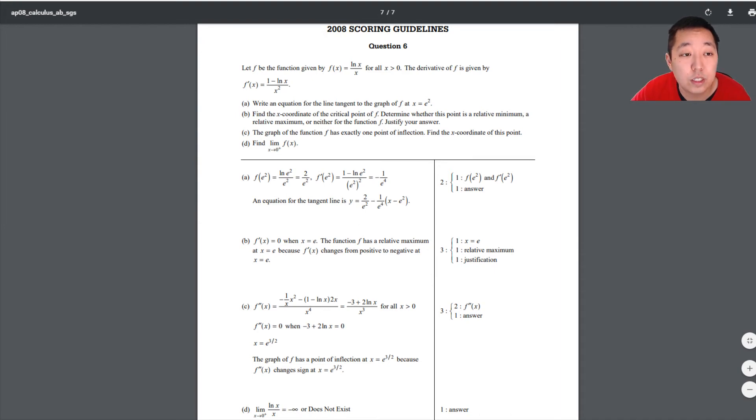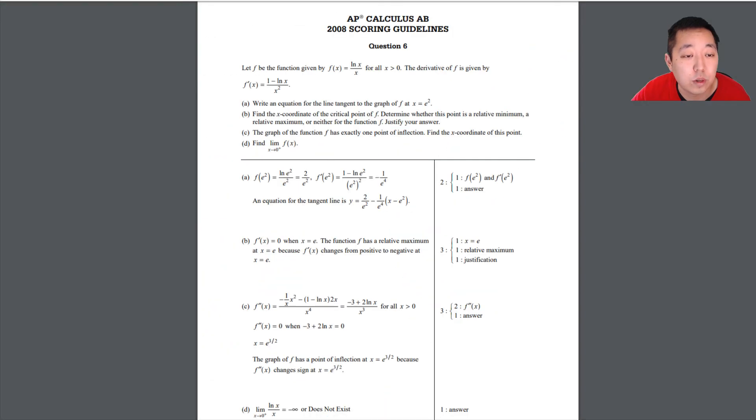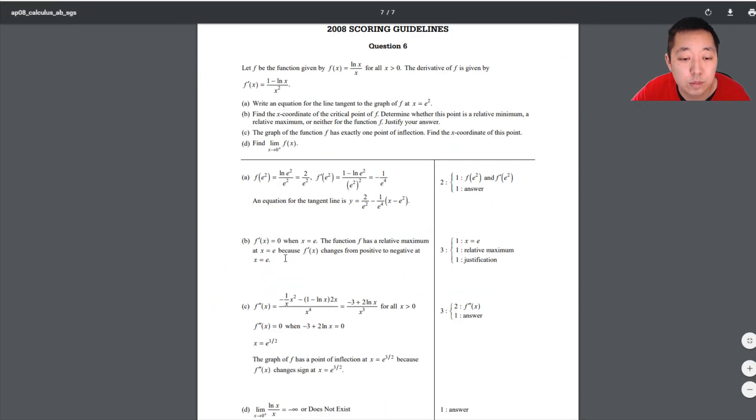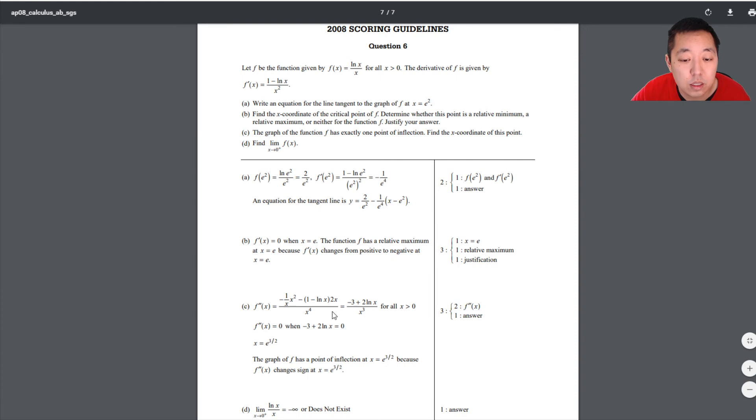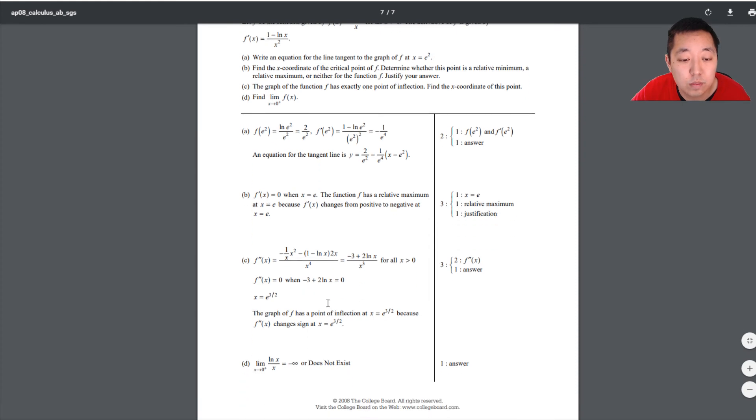Okay. Let's take a look. Minus 2 over e squared minus 1 over e to the 4th times x minus e squared. Okay, good. Relative maximum at x equals e. I get e. e to the 1, which is e. That's e to the 3 halves. And it changes signs there. Negative infinity or does not exist.